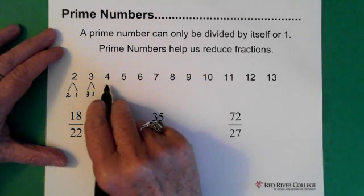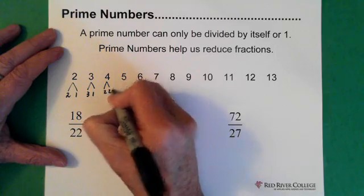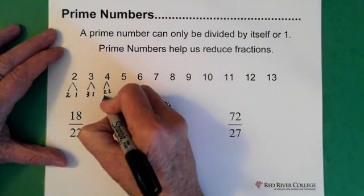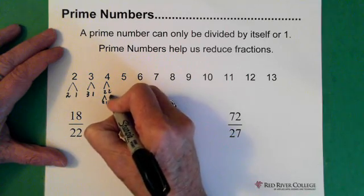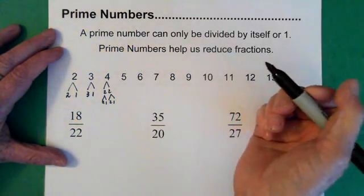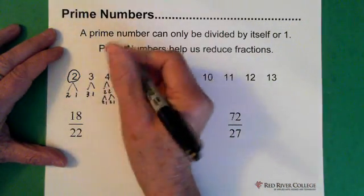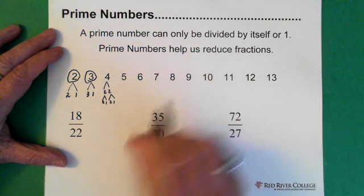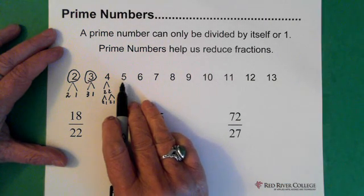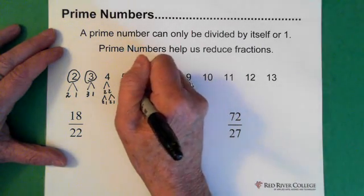Four, however, we can take two and multiply it by two to get four, and we know two is a prime number. So four is not a prime number. Two is a prime number, three is a prime number. Five — the only way we get five is by taking five and multiplying it by one. So five is also a prime number.